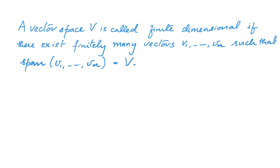For many of the concepts and results that we saw in this unit, it is essential that there exists a finite set that spans the vector space. A vector space V is called finite dimensional if there exist finitely many vectors v1 to vn such that the vectors v1 to vn span the vector space V.